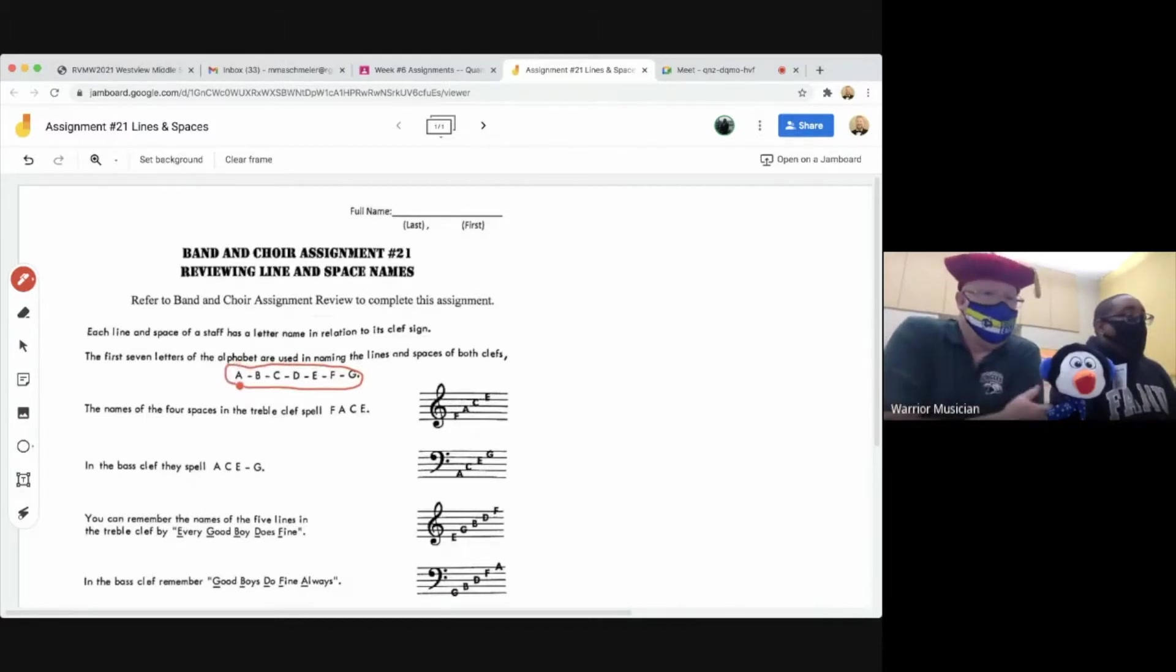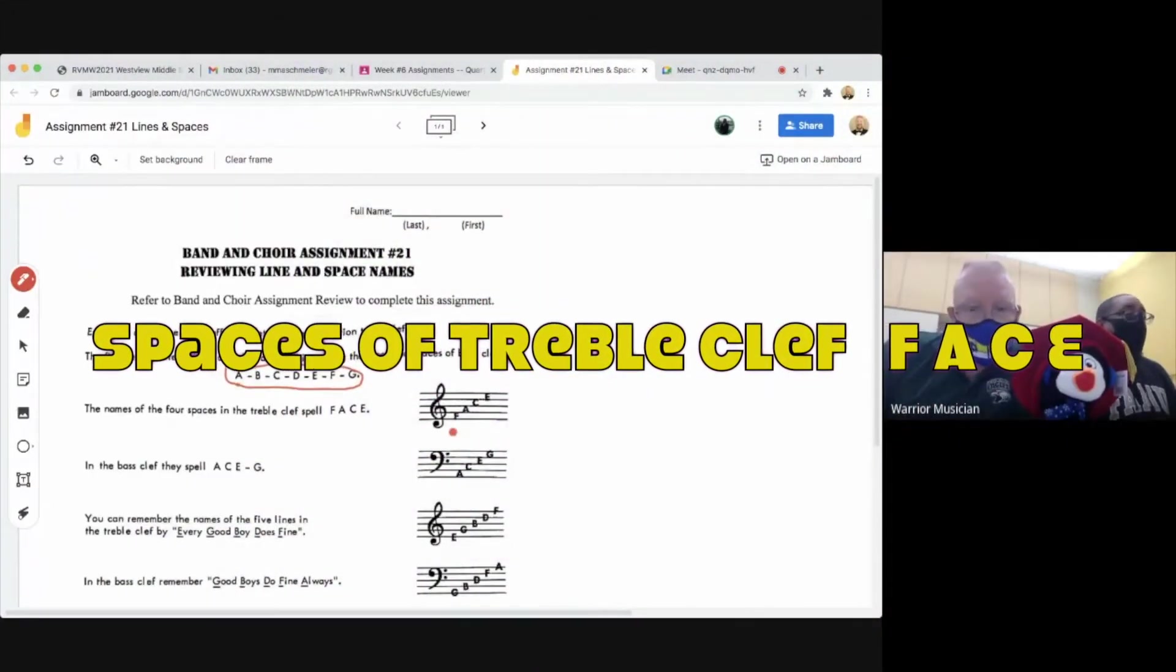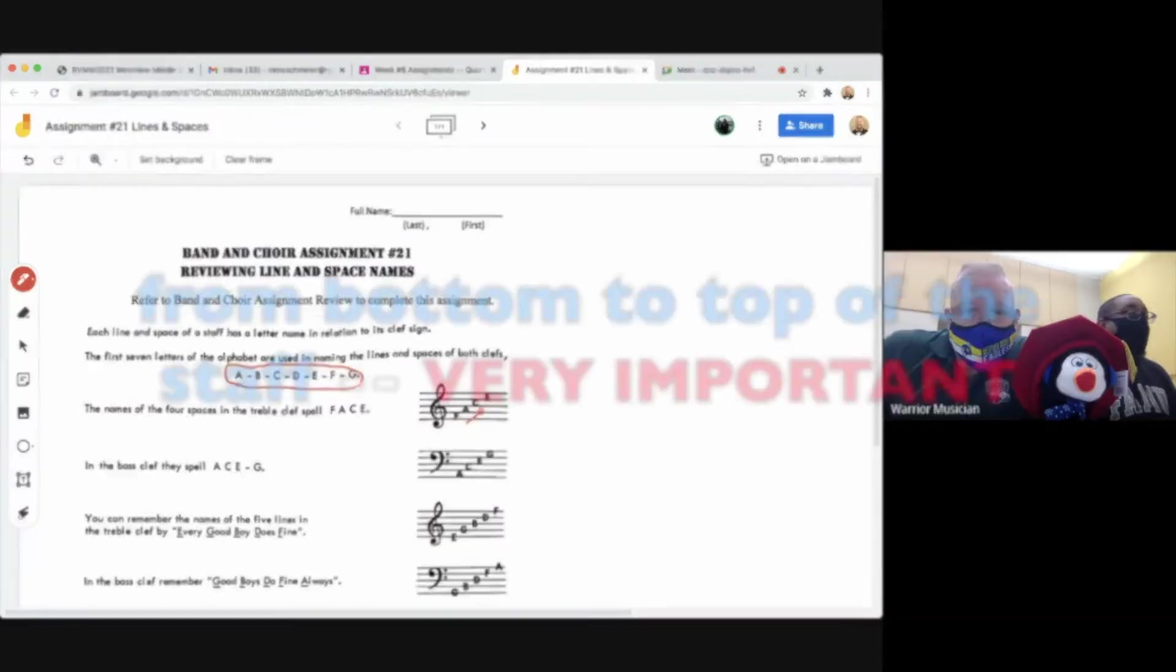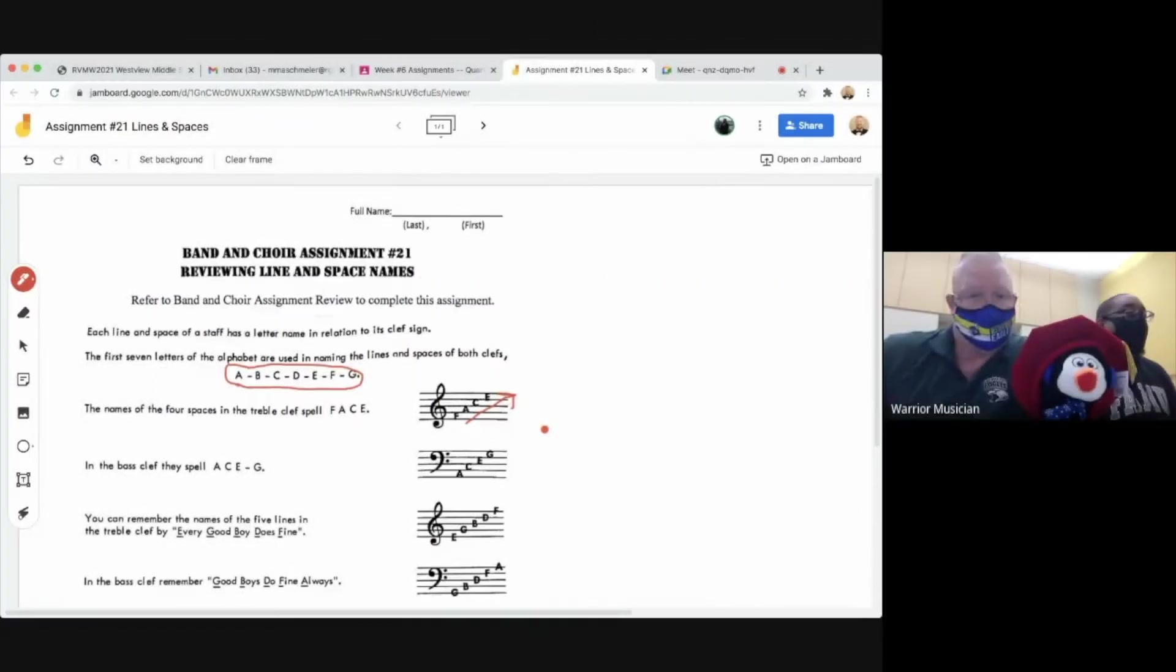So the names of the four spaces of the treble clef actually spells the word space, F-A-C-E. And we're spelling from the bottom of space to the top space. So space one is the bottom space all the way up to the fourth space, which would be the top space. Two important words in that sentence: spaces, treble clef.